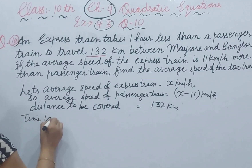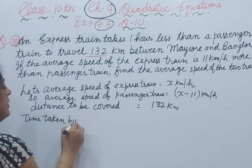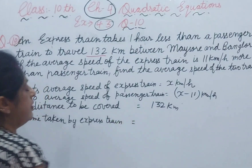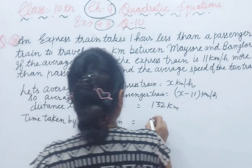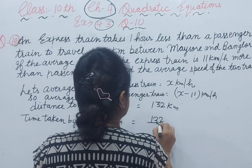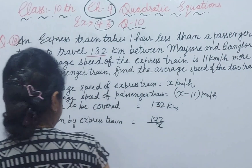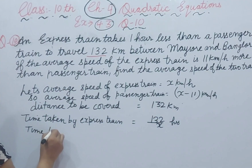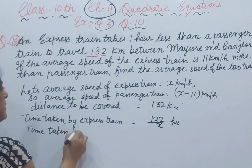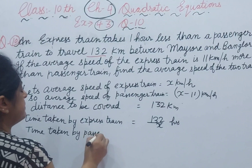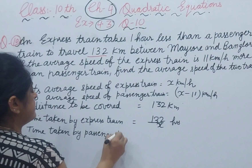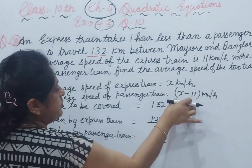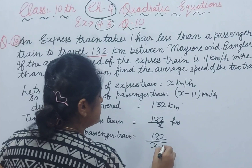Distance to be covered is 132 km. Time taken by the express train — what is the formula of time? Time equals distance over speed. And time taken by the passenger train equals distance over speed; speed of passenger train is x minus 11, so time is 132 over (x minus 11).